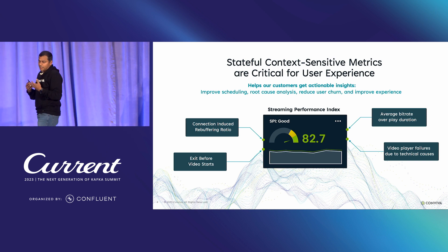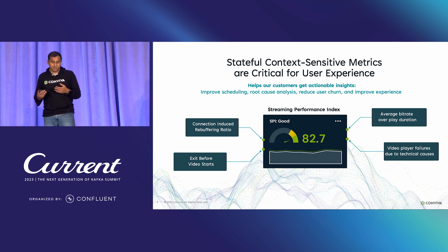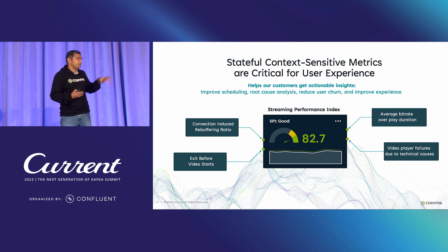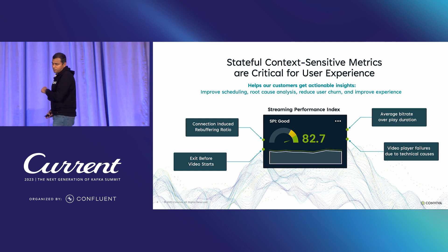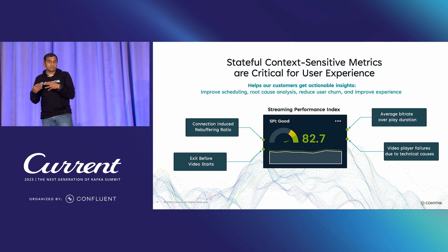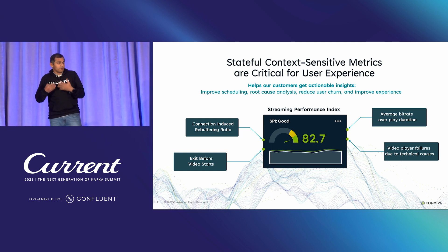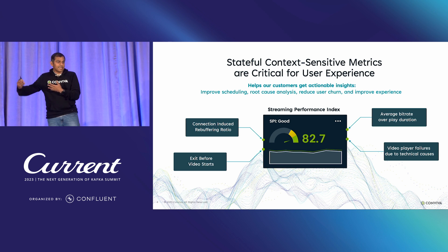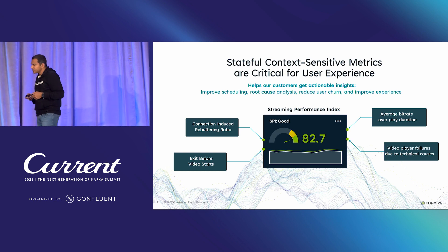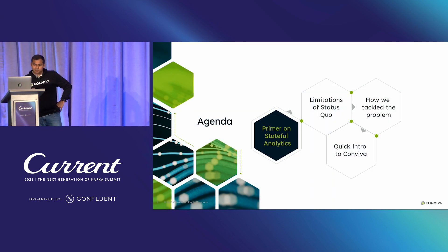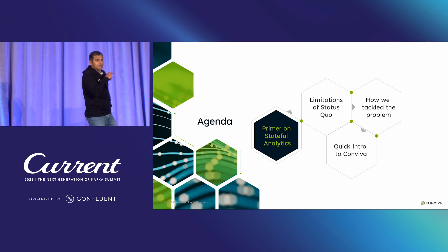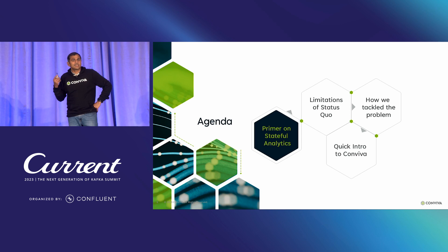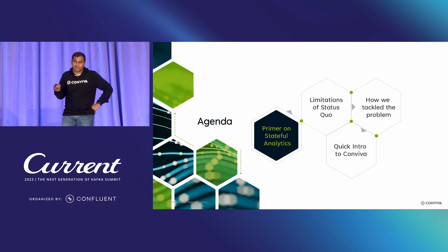Using these metrics, our customers measure a benchmark called the streaming performance index. Each stateful metric — connection-induced buffering, exit before start, average bit rate, video player failures — is used almost as a benchmark for monitoring performance in real time. These are the KPIs they look to optimize and measure their own performance. This is what the operational data platform does.